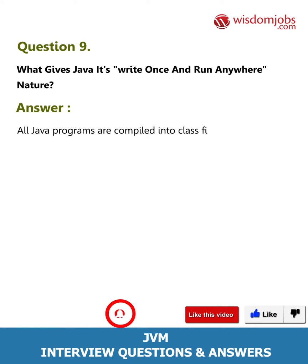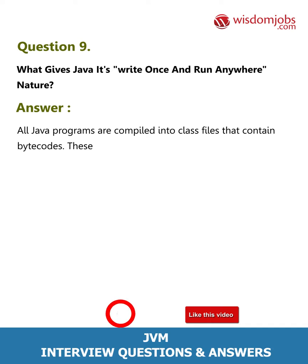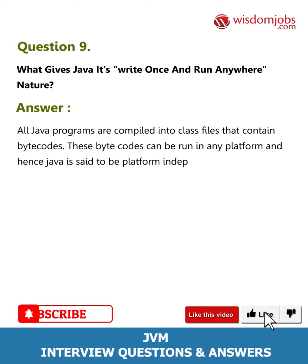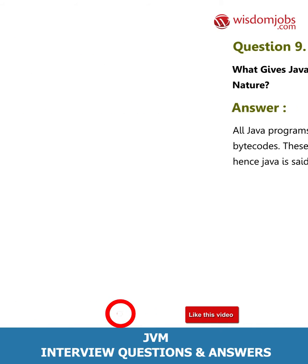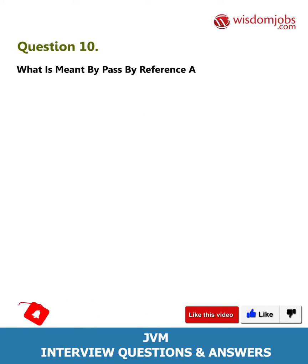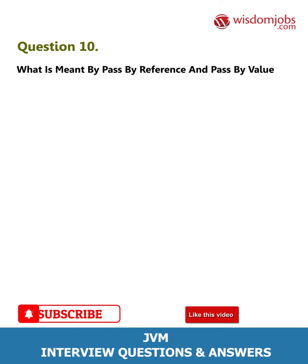Question 9: What gives Java its 'write once, run anywhere' nature? Answer: All Java programs are compiled into class files that contain bytecodes. These bytecodes can be run on any platform, and hence Java is said to be platform independent.